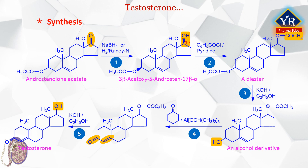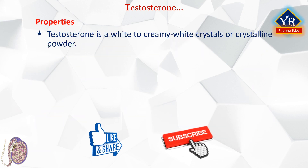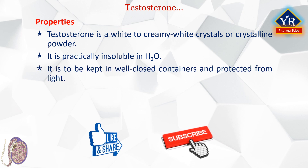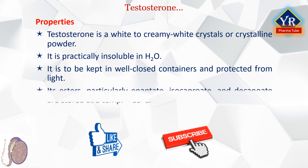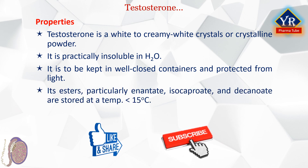When necessary to convert testosterone into the corresponding esters, that is propionate, enantate, cypionate, and a few other testosterone esters, the necessary acylation can be accomplished. Testosterone is a white to cream-white crystals or crystalline powder. It is practically insoluble in water and should be stored in well-closed containers and protected from light. Its esters, particularly enantate, isocaproate, and decanoate, are stored at a temperature not exceeding 15 degrees centigrade.